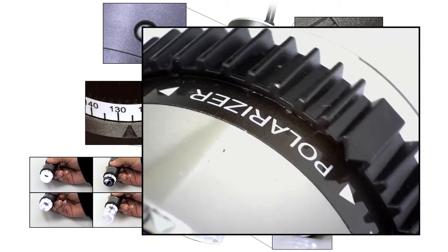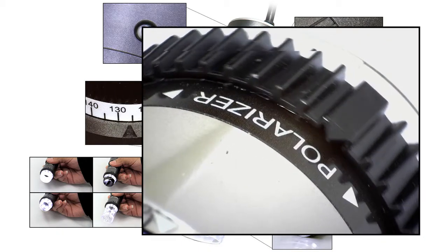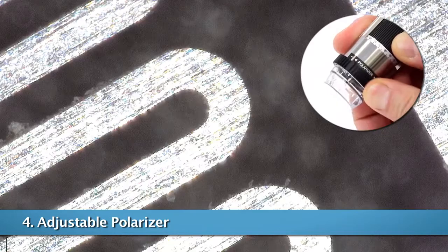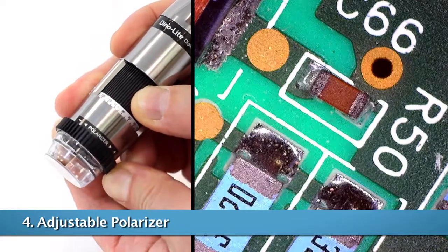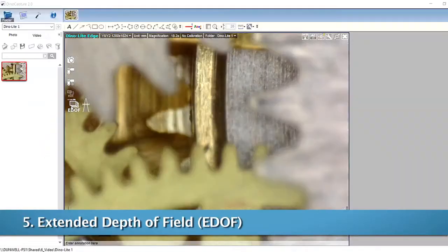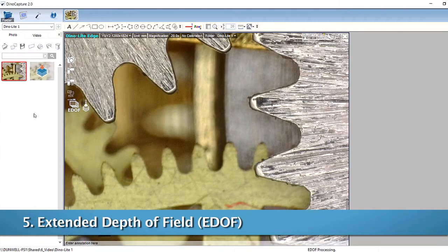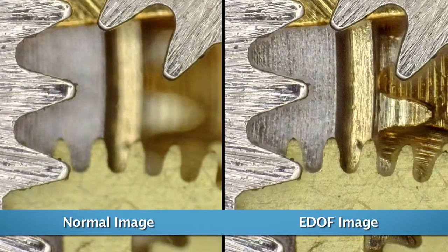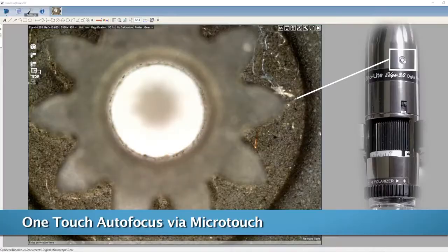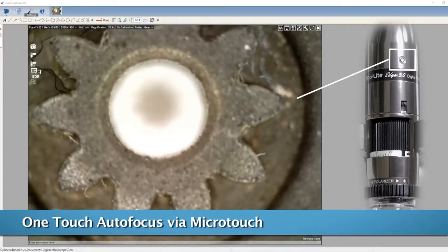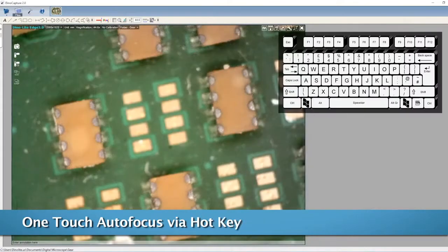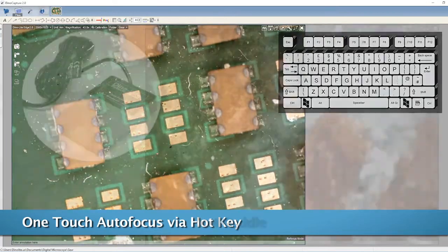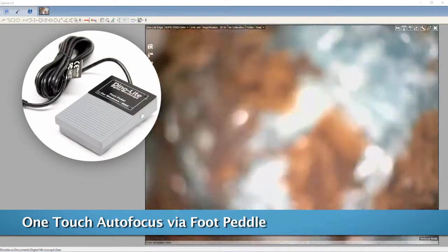The adjustable polarizer is recommended because it reduces or removes unwanted glare on reflective surfaces. EDUF models can capture multiple images at different depths and stack them automatically into one clear image. EDUF models also now include a one-touch autofocus which allows users to quickly trigger a focus on the center of the image.